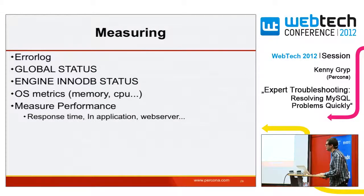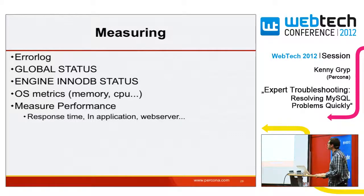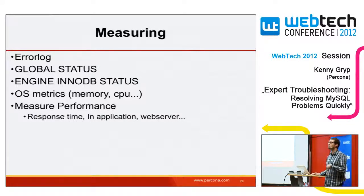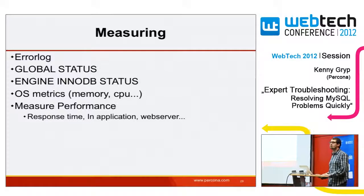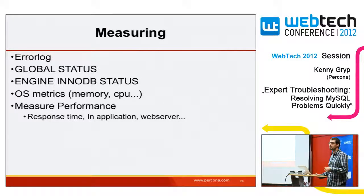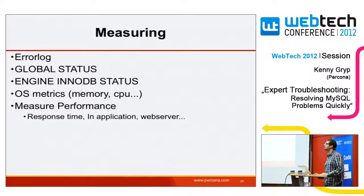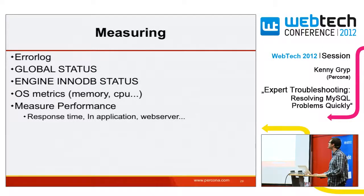The best way to get insight is to put instrumentation in the application, because the application is the center of everything. In PHP, it's better to include instrumentation in your code to measure what the database is doing. What can we measure in the database? We've got the error log, SHOW GLOBAL STATUS showing global counters like threads_connected and queries per second, and SHOW ENGINE INNODB STATUS which contains many more counters.